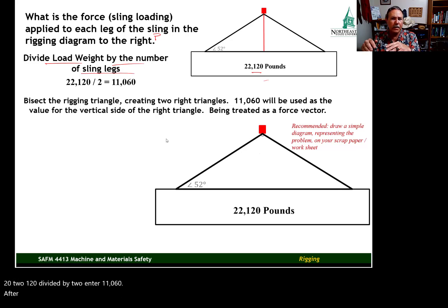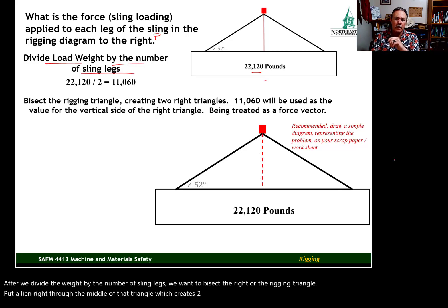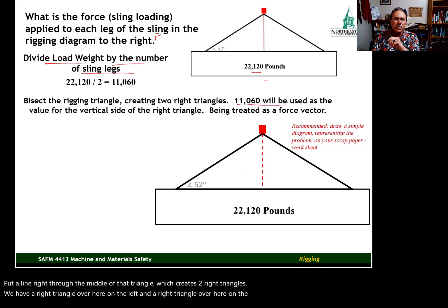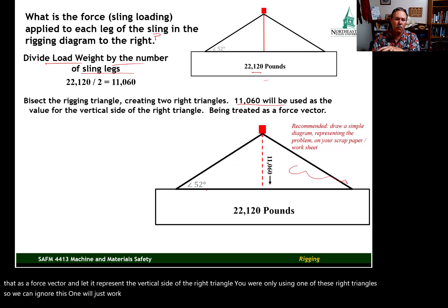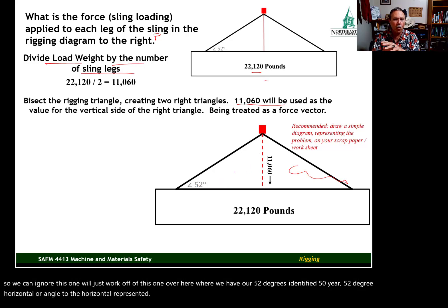After we divide the weight by the number of sling legs, we want to bisect the rigging triangle. Put a line right through the middle of that triangle, which creates two right triangles. We have a right triangle over here on the left, and a right triangle over here on the right. Now, the 11,060, we're going to treat that as a force vector, and let it represent the vertical side of the right triangle. We're only using one of these right triangles, so we can ignore this one. We'll just work off of this one over here, where we have our 52 degrees identified, 52 degree horizontal, or angle to the horizontal represented.